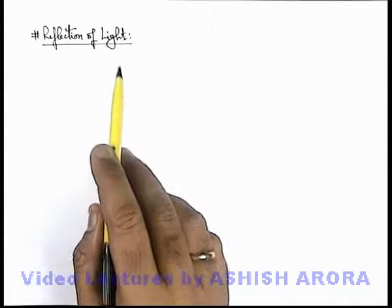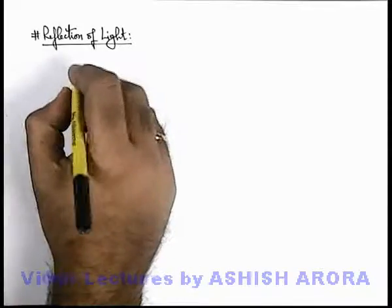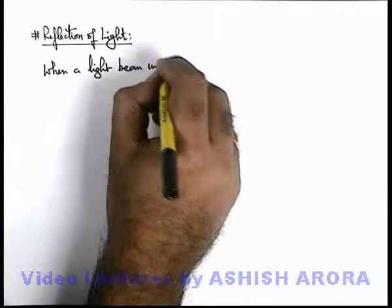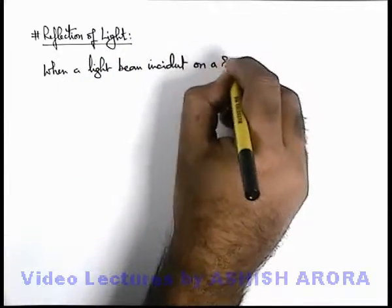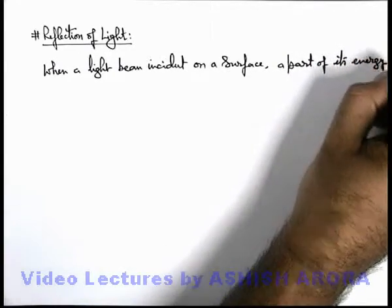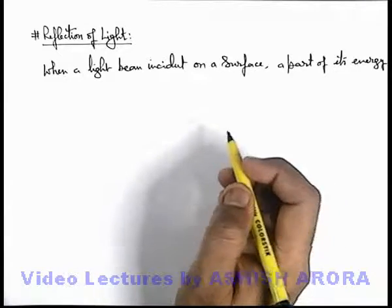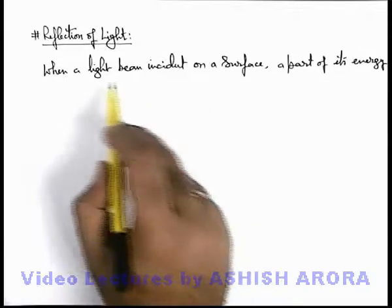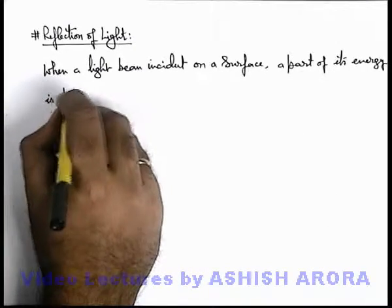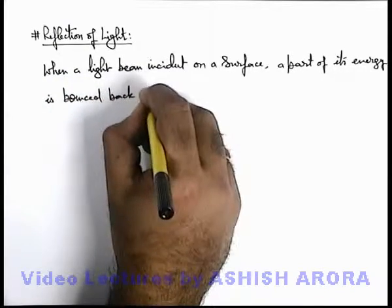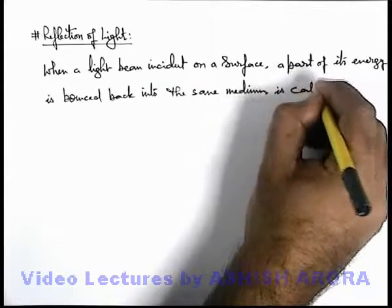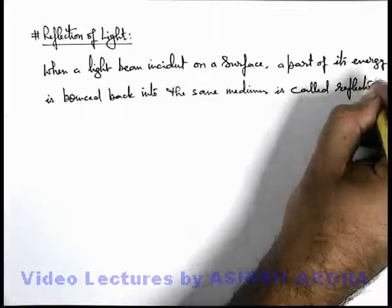Let us now discuss an important phenomenon in light, i.e. reflection of light. When a light beam is incident on a surface, a part of its energy is bounced back into the same medium from which it was incident. This is called reflection of light. Light is a form of energy which enables our eye to see the surrounding by giving it sensation of vision or sight.